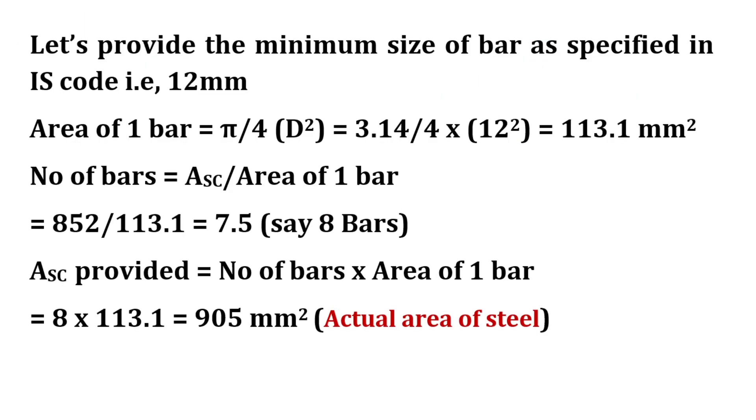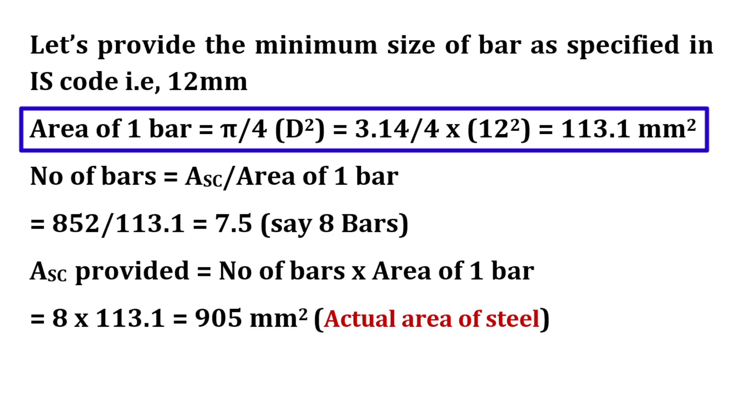Let's provide the minimum size of bar as specified in IS code, that is 12 mm. Area of 1 bar will be equal to Pi by 4 d square, which will be equal to 113.1 mm square.